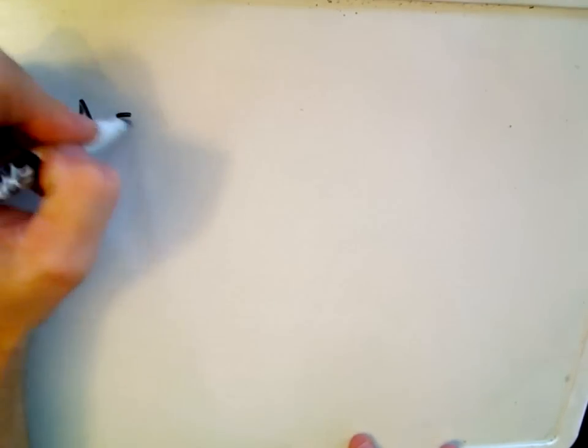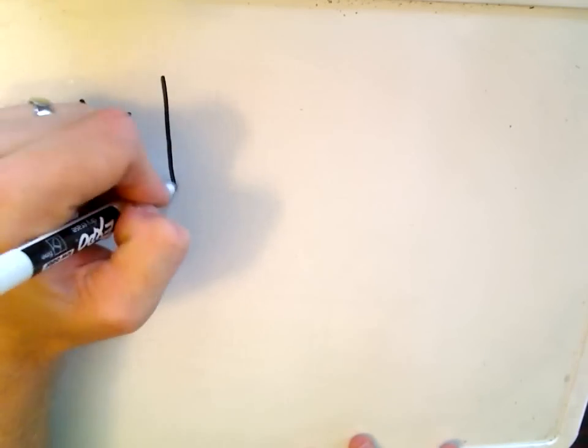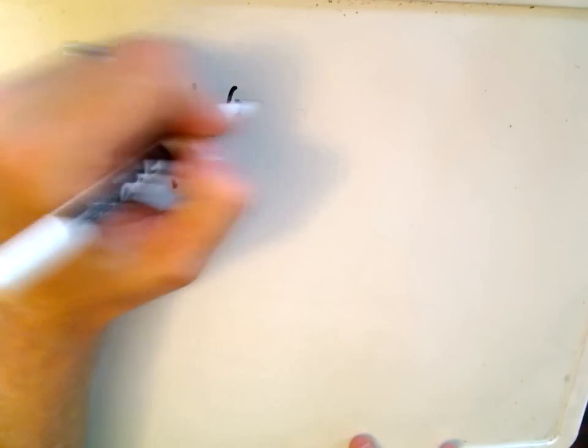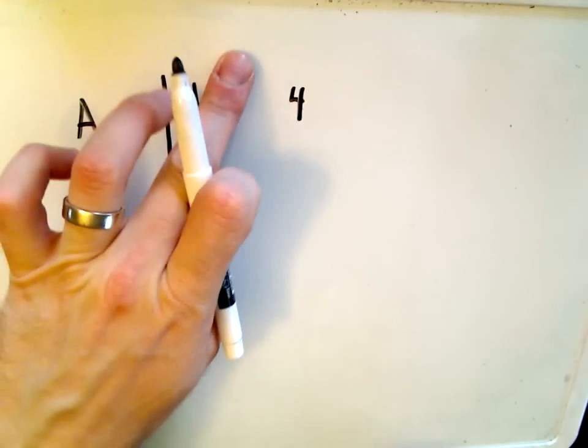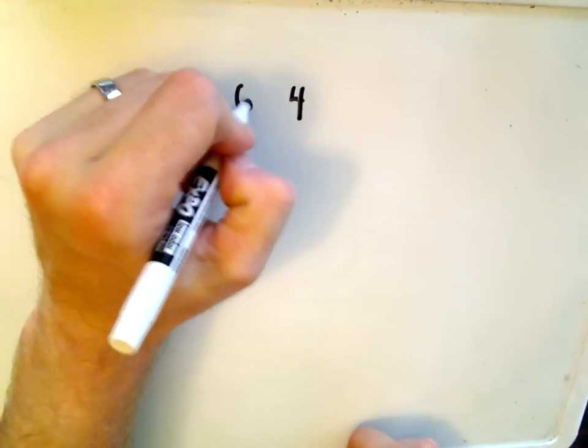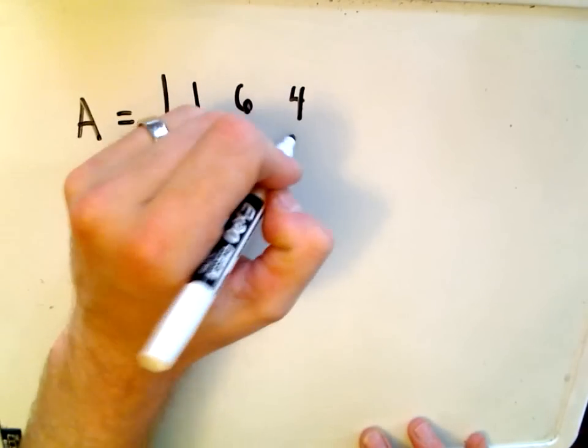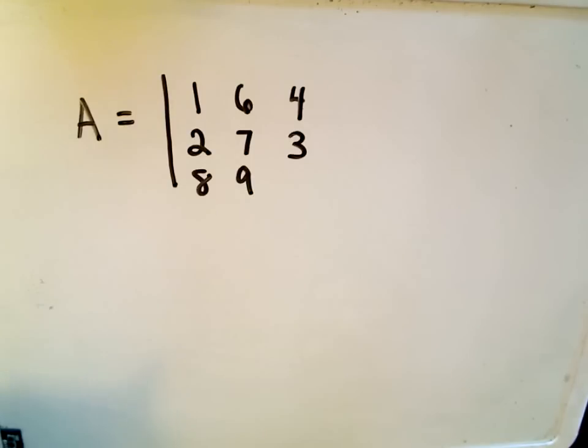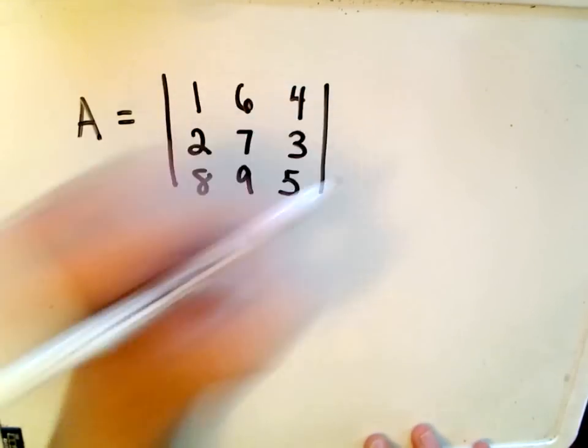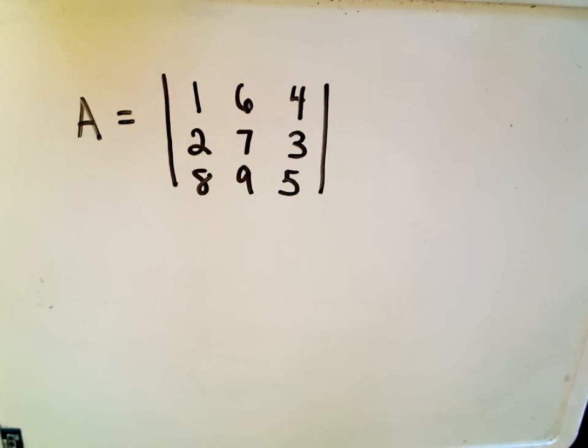Let's come up with some specific numbers. I'll make up a matrix at random - hopefully the numbers won't be too terrible. How about 1, 6, 4, 2, 7, 3, 8, 9, and 5. I'm keeping everything positive to keep it straightforward. Let's compute the determinant of this matrix.